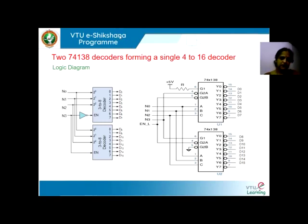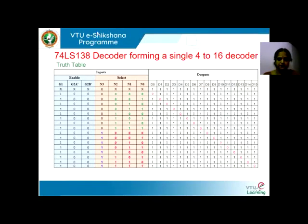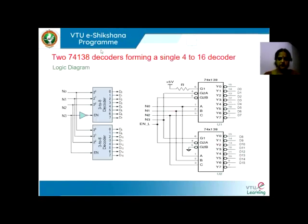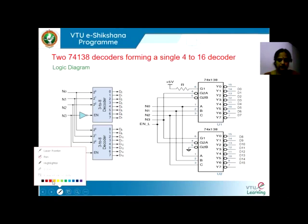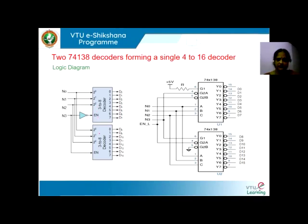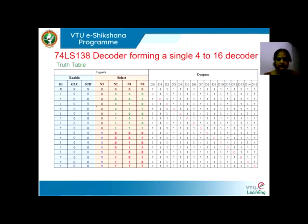Let us design the circuit using 74LS138. If you consider two 3-to-8 decoders, as we have seen from the truth table, the ABC inputs remain the same. So what we can do is short the ABC inputs of the first IC and those of the second IC — these ABCs of both 74LS138 chips can be connected together.